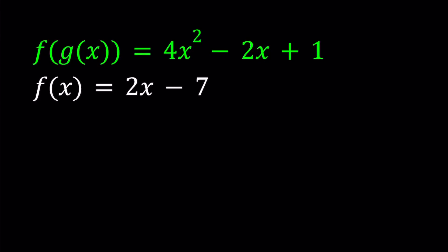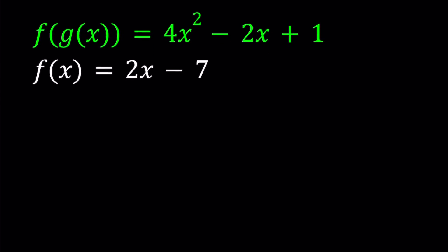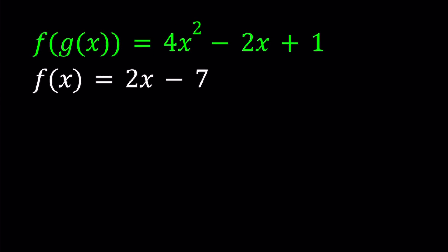Hello everyone. In this video we're going to be solving a functional system. We're given f of g of x equals 4x squared minus 2x plus 1 and f of x equals 2x minus 7, and we're going to be finding g of x from this equation.